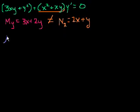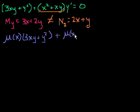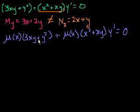So let's multiply both sides by mu of x. We get: mu(x) times (3xy + y²) plus mu(x) times (x² + xy) times y prime equals 0 — since 0 times mu(x) is still 0. The goal is that after multiplying both sides by mu(x), we should have an exact equation.